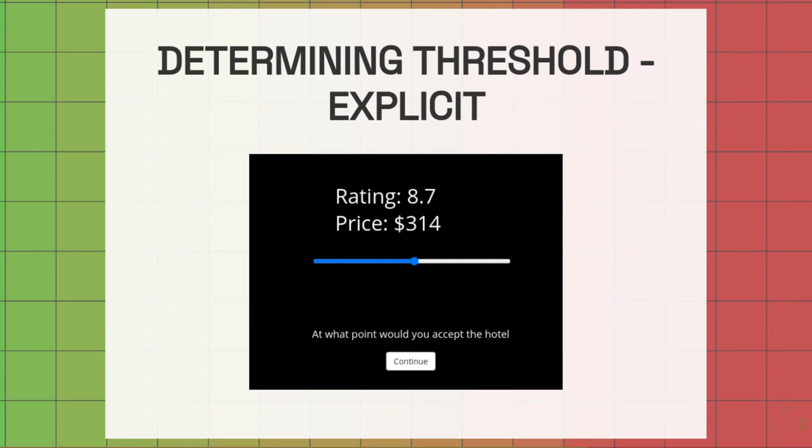The other method of determining the threshold is what I called an explicit method, where I gave the participants a display showing the rating and the price of a particular hotel, and a slider that they could control that would change these values. They could control where on the slider they thought the optimal trade-off between a good rating but still an acceptable price would be.